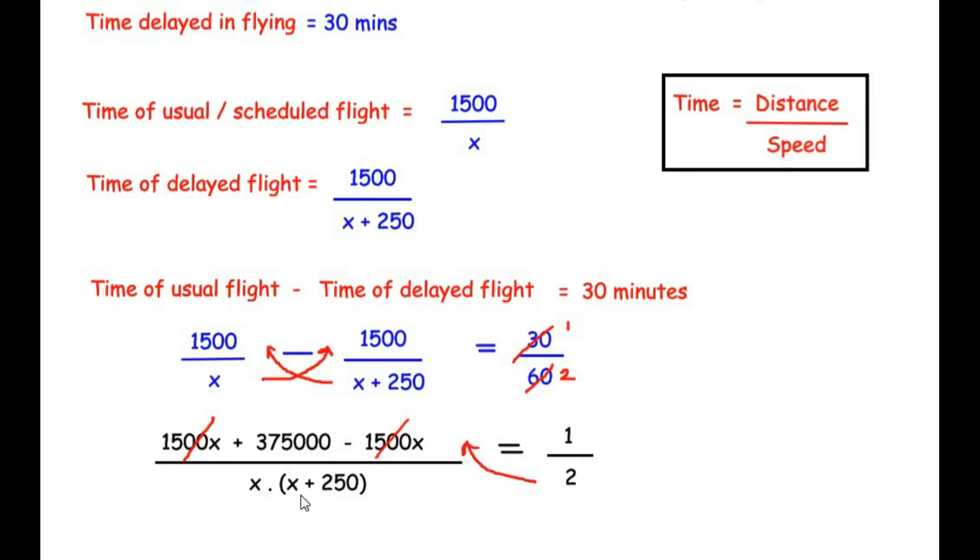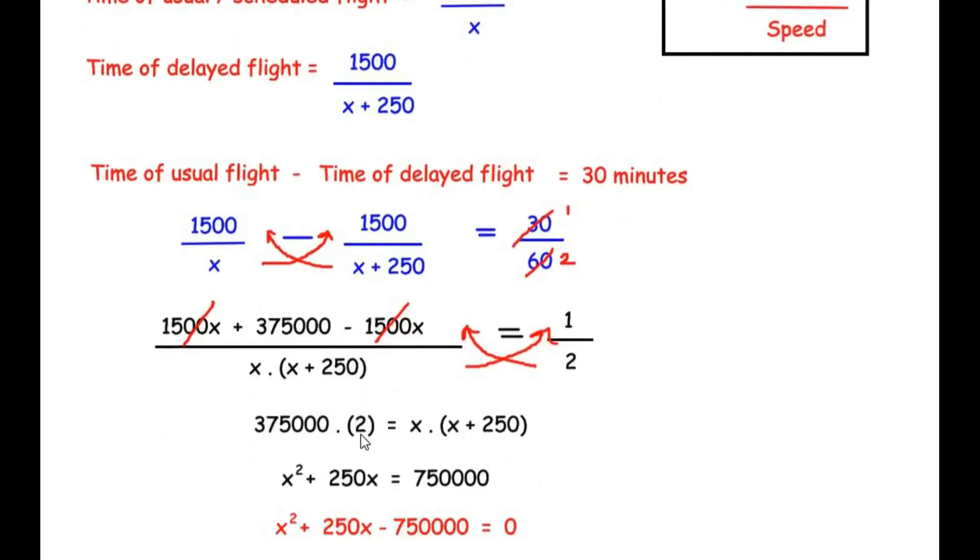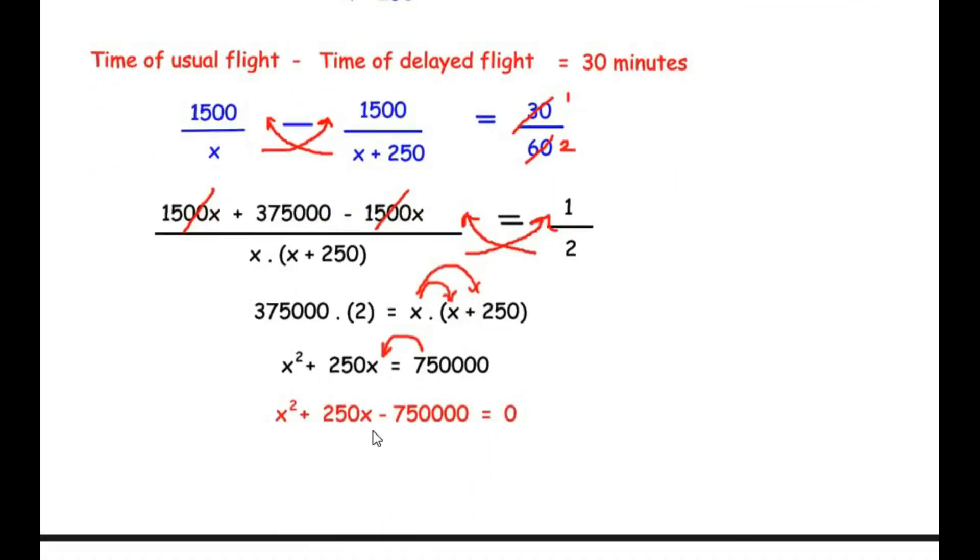So now again cross multiplying, 2 multiplies with this number and the denominator x times x plus 250 multiplies with 1 and we get 375,000 multiplied by 2 is equal to x times x plus 250. Next, expanding the brackets, we get x times x as x square plus x times 250 gives us 250x is equal to, the product of these two numbers gives us 750,000. Now taking this number on the left hand side of the equation, we get a quadratic equation which is x square plus 250x minus 750,000 equal to 0.